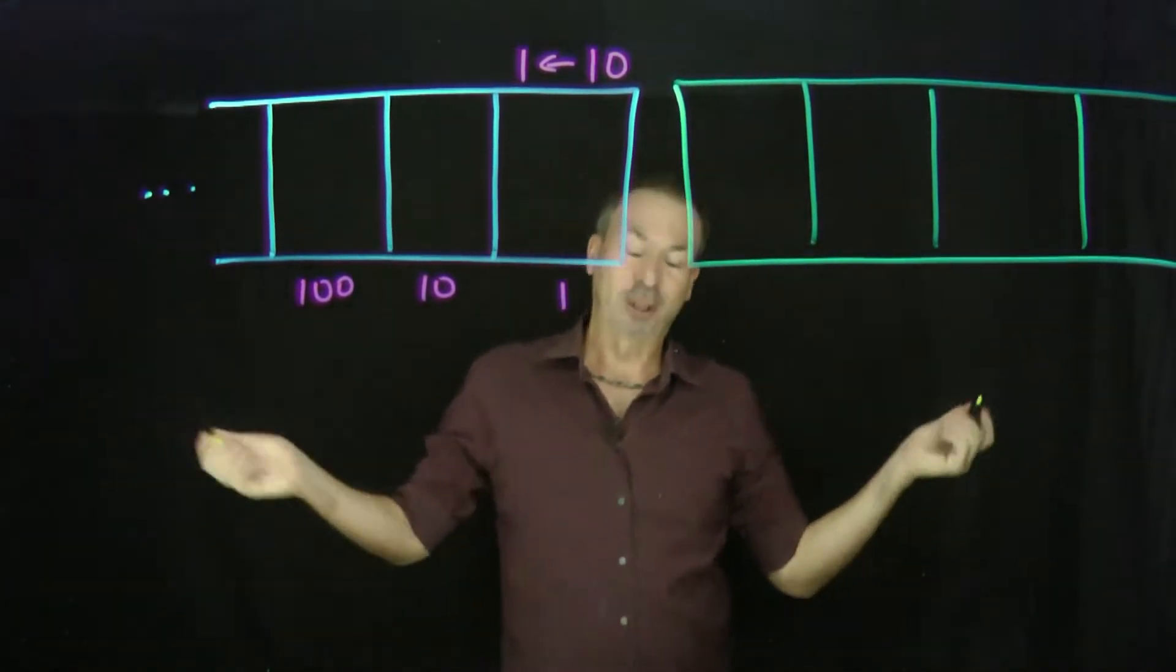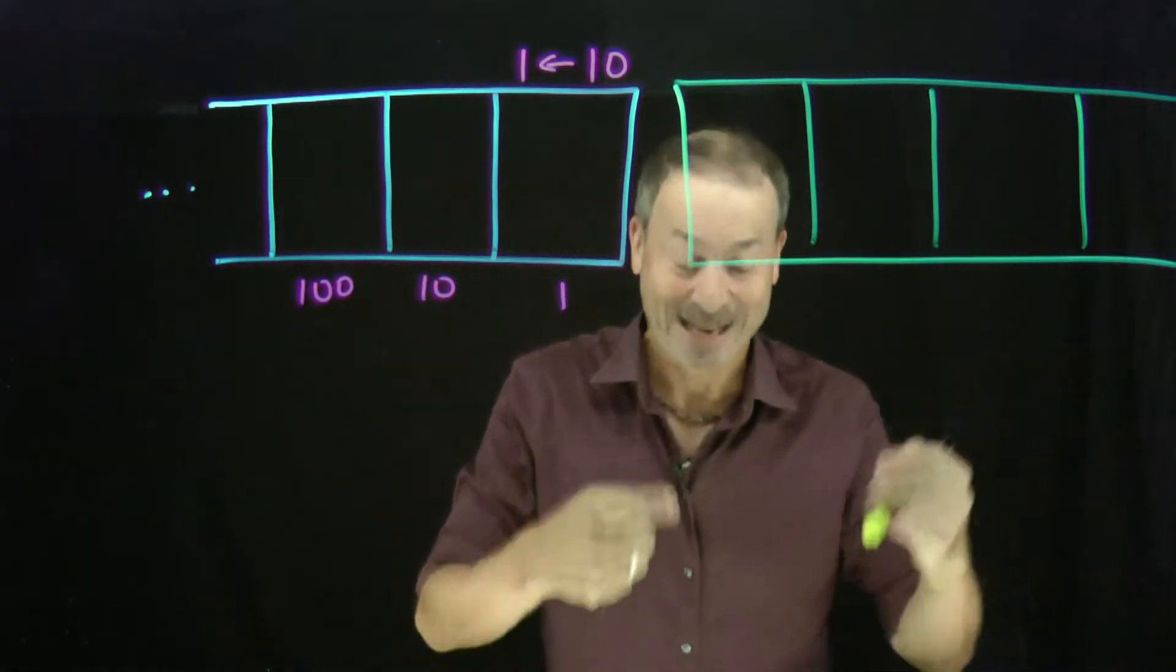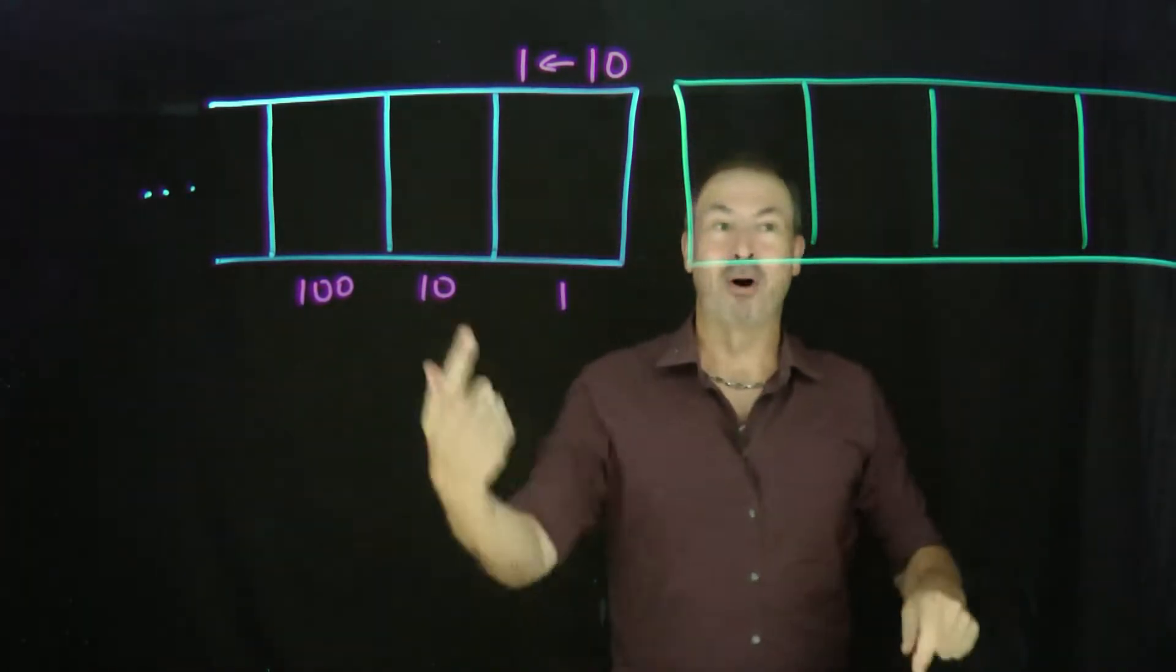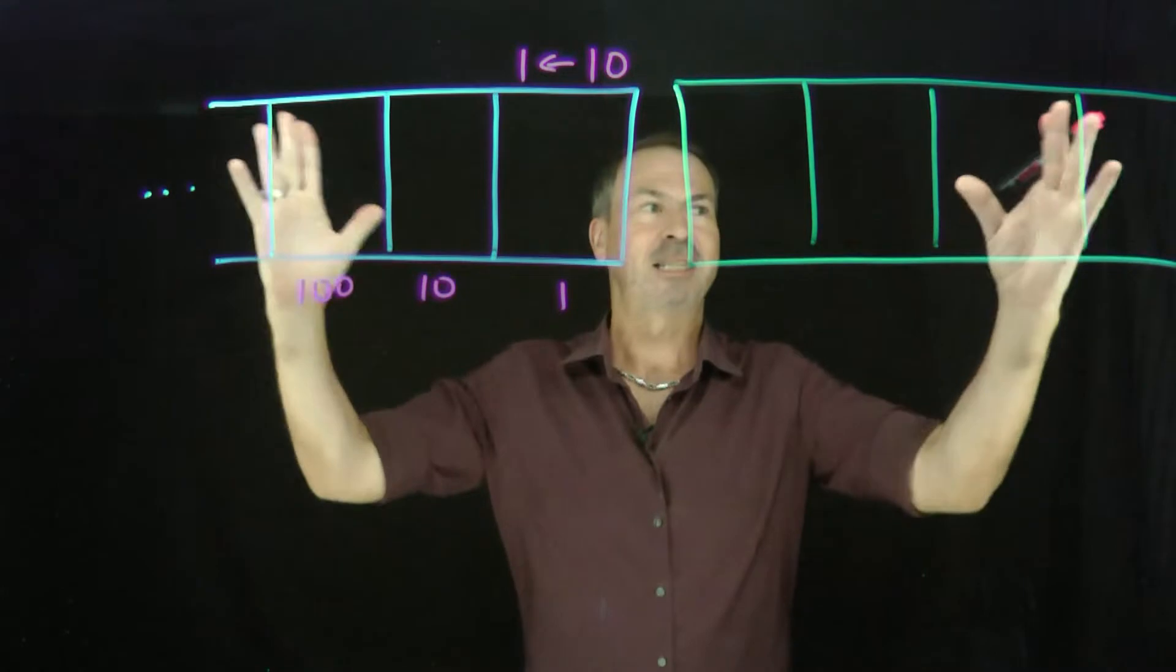Great! Now of course the question is, what do those boxes mean? Can we give meaning to boxes going off to the right to make a nice symmetrical picture?